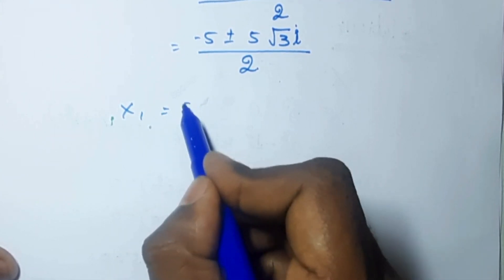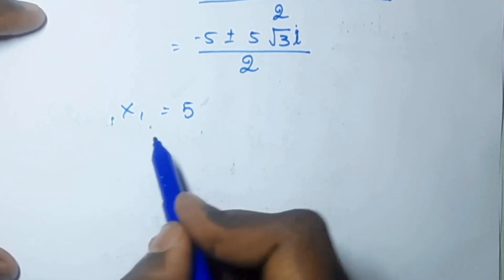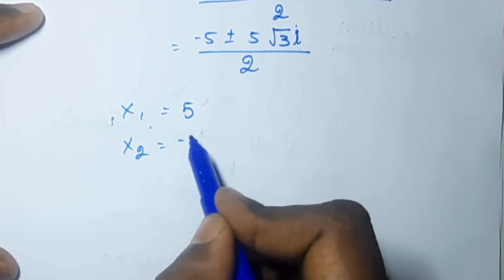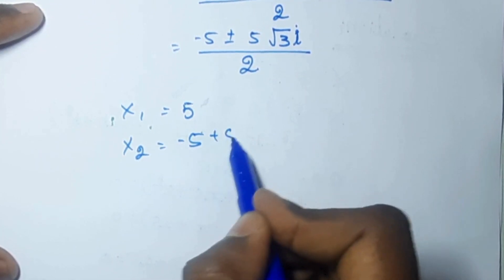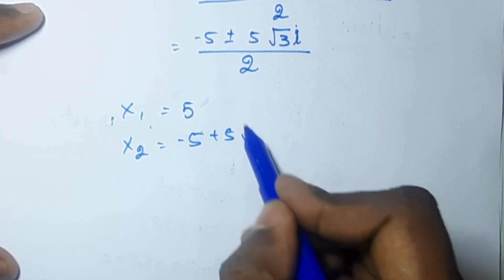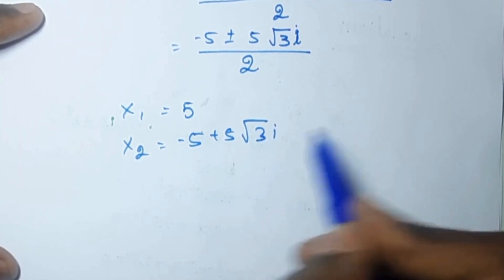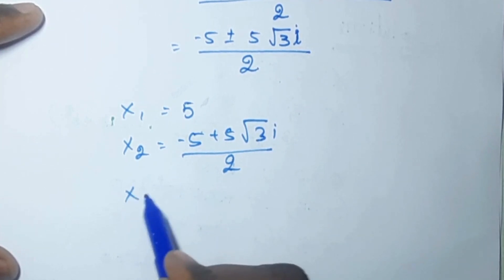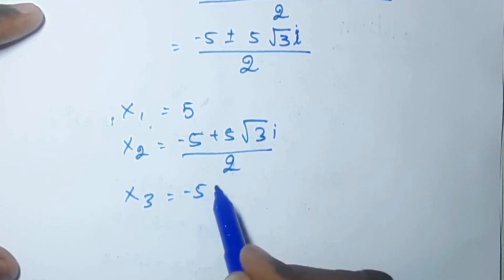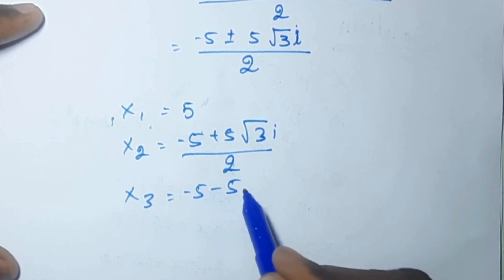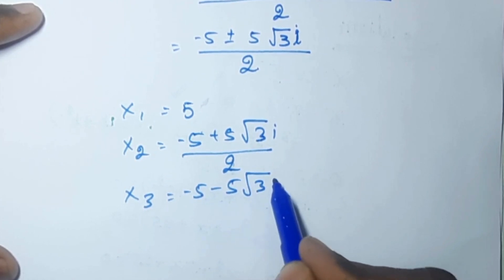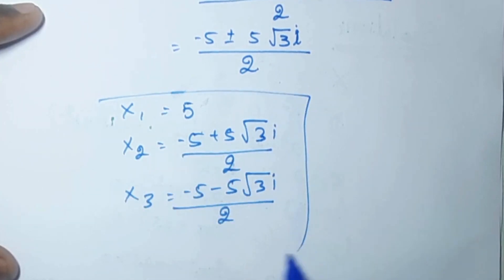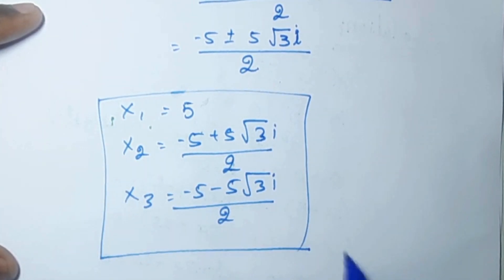So the three roots are: x1 equal to 5, which we got earlier. x2 equal to minus 5 plus 5 square root of 3 i, by 2. x3 equal to minus 5 minus 5 square root of 3 i, by 2. These are the three x values we got.